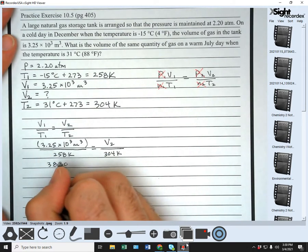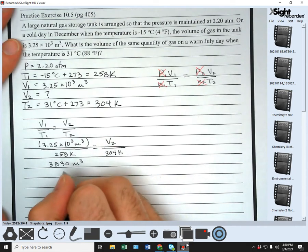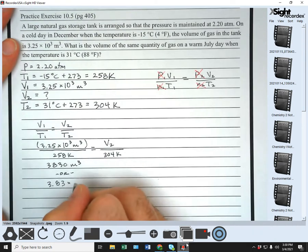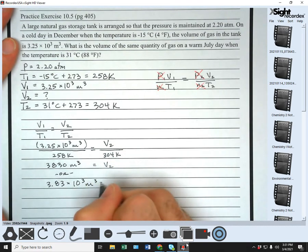so 3,830 cubic meters, or if you're doing scientific notation, it would be 3.83 times 10 to the third meters cubed. Either way.